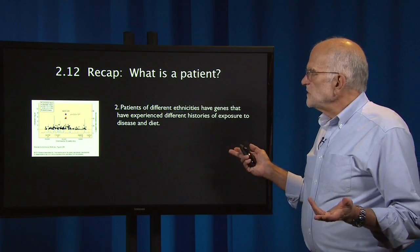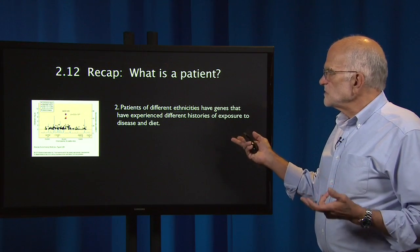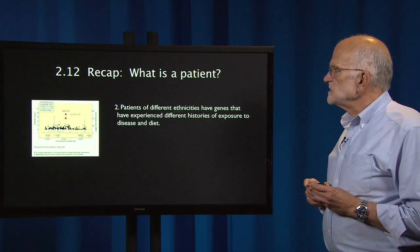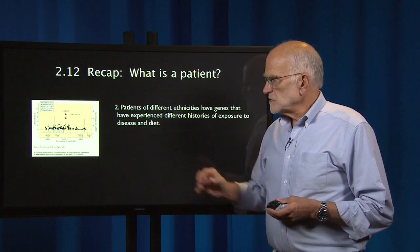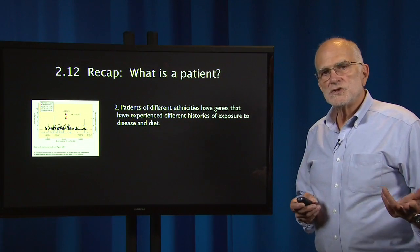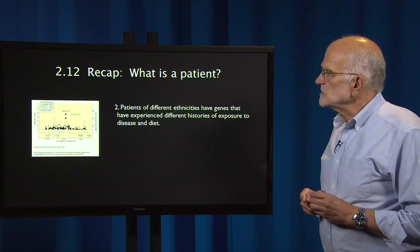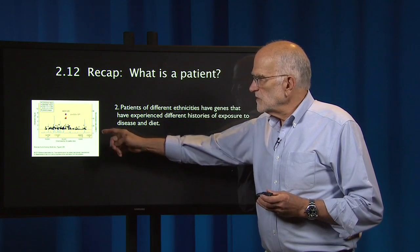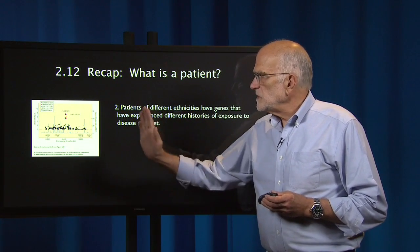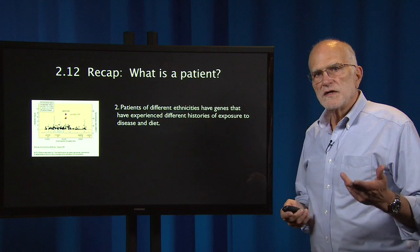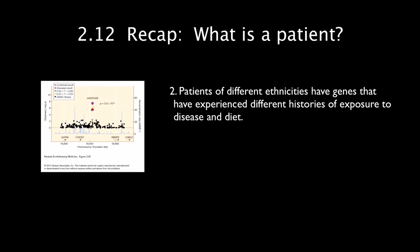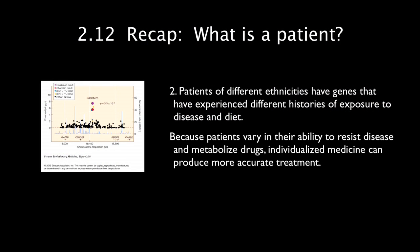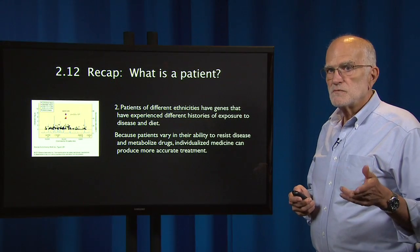Secondly, patients of different ethnicities have genes that have experienced different histories of exposure to disease and diet. The illustration evokes a GWAS — a genome-wide association study — showing that in a particular part of Africa there is a particular region of the chromosome that provides resistance to tuberculosis. Because patients vary in their ability to resist disease and metabolize drugs, individualized medicine can probably produce more accurate treatment, but it doesn't come cheap.